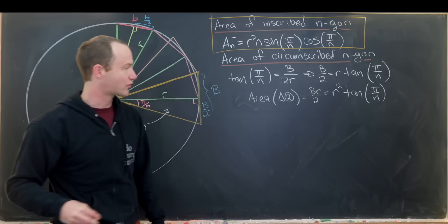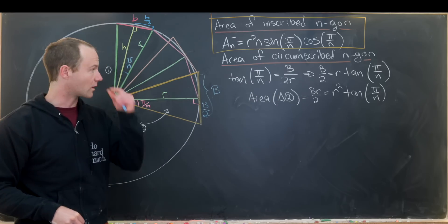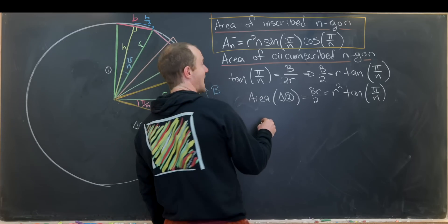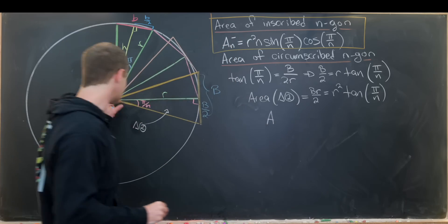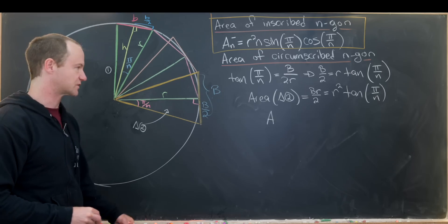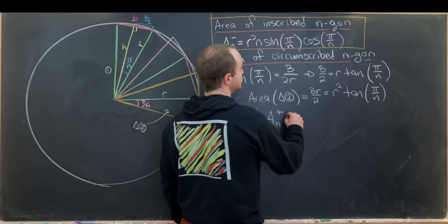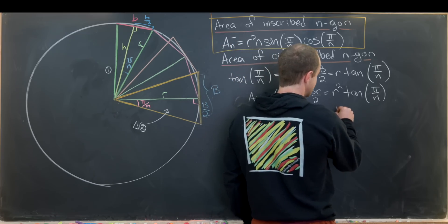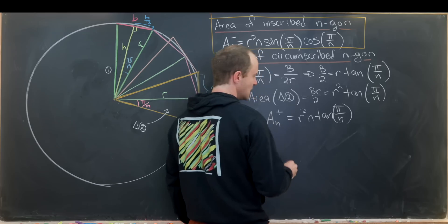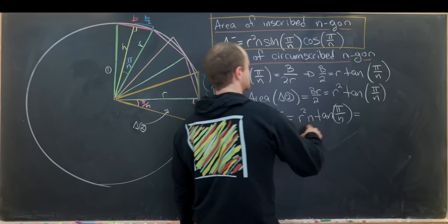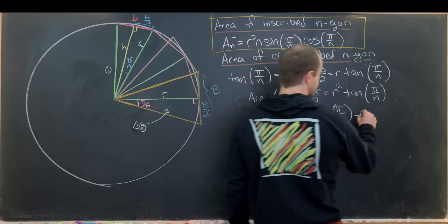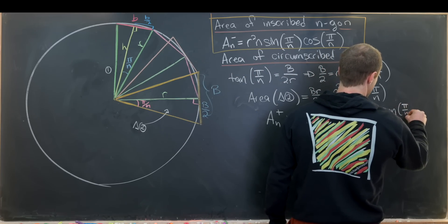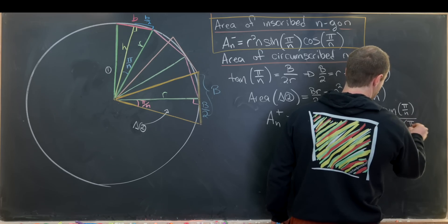The area of triangle two is one-half base times height, which gives r² times tangent(π/n). Multiplying by n gives the area of the circumscribed n-gon: A_n⁺ = r² · n · tan(π/n), which we can also write as r² · n · sin(π/n) / cos(π/n), looking ahead to the limit calculation.